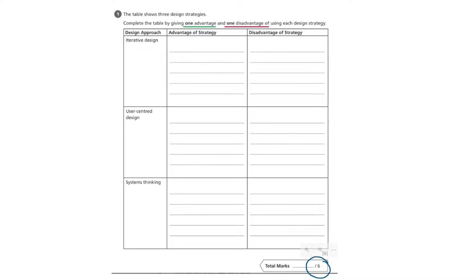We can see that the total marks for the question are six. Therefore, we can realistically draw the conclusion that each blank box which we've been asked to write either an advantage or disadvantage in for each design approach is worth one mark. Therefore, we don't want to be leaving any of the boxes blank.